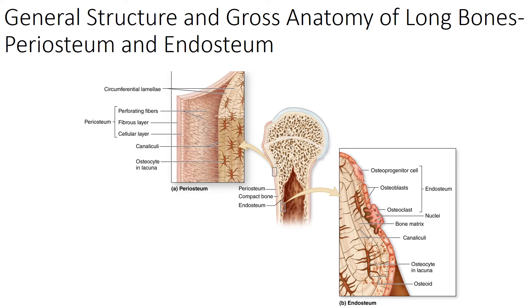Two other structures found within long bones are the endosteum and the periosteum. The endosteum is the internal layer of the bone — endo means internal — and it covers most of the internal surface of bones. Within the endosteum we find the cells of bones, such as osteoprogenitor cells, osteoblasts, and osteoclasts.